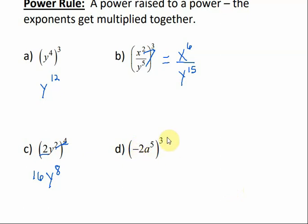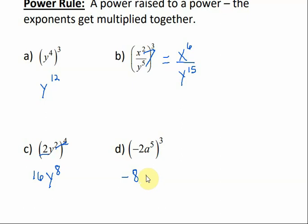For d, a negative 2 to the 3rd power: a negative number raised to an odd power gives a negative number. 2 to the 3rd is 8, so the coefficient is negative 8. Then the exponents get multiplied since we're raising a power to a power, giving a to the 15th.